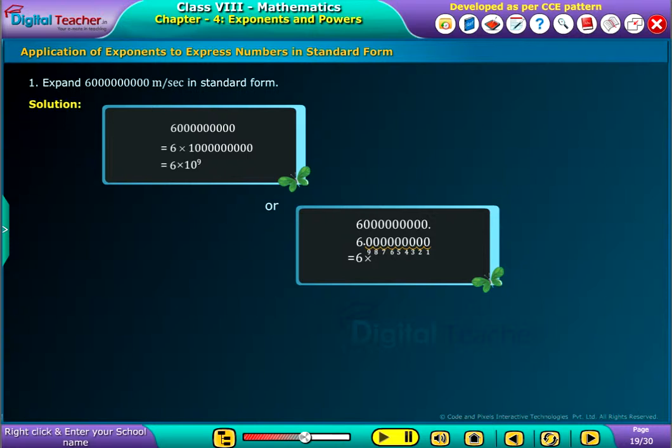Now, the number of digits to the left of the decimal point are 10. To express this number in standard form, we have to move decimal point 10 minus 1, that is 9 places towards left, and multiply the resultant number by 10 power 9.